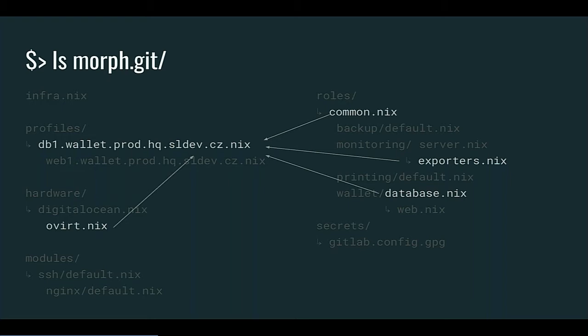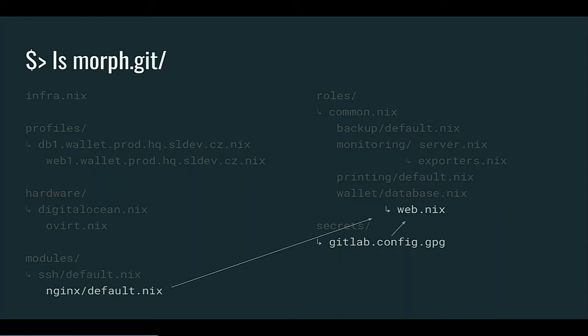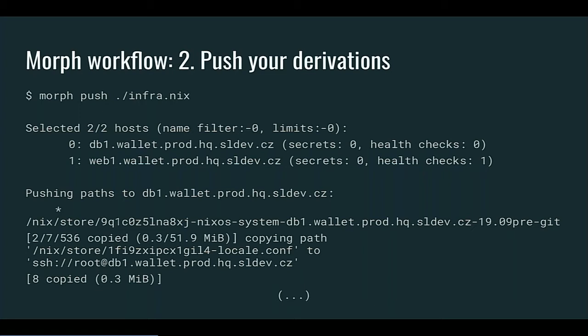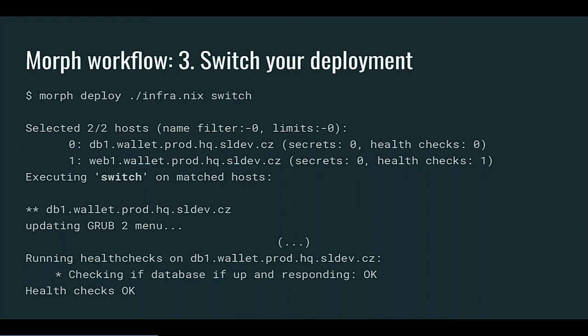Roles are built from modules — in this example, Nginx. We use Git Crypt to manage our secrets, so they're encrypted on the remote Git server but we can work with them like plain files. The workflow is simple: we execute 'morph build' to build all our derivations for all servers, 'morph push' copies the closures to remote servers, and 'deploy switch' switches the configuration on all instances. After the switch completes, it runs health checks, and in case any fail, it executes a rollback, so we don't have much downtime.